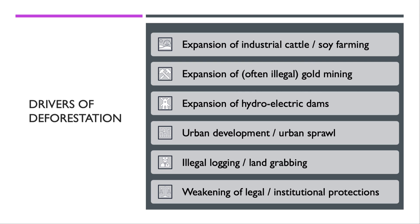There's no single cause of deforestation — that's a key point to make in any essay. Here are six: the expansion of industrial cattle and soy farming in Brazil; expansion of often illegal gold mining; the growing use of hydroelectric dams as a source of energy; urban development and urban sprawl which impacts on forest; illegal logging; and land grabbing. The bulk of logging in Brazil is illegal — by some estimates, 80% of logging is illegal.